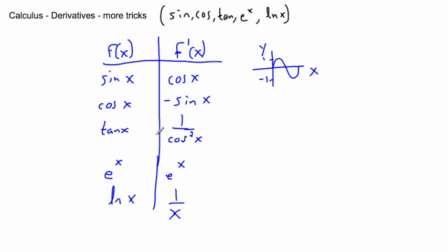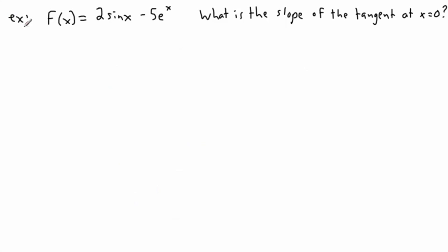So these are the main tricks we need to use with these five different tricks here. Knowing about the function, the original function here, and this is its derivative. Keep in mind, derivative is the slope of the tangent at any point. Well we can take a look here at an example then. f of x equals 2 sine x minus 5 e to the x, and we're looking for the slope of the tangent at x equals 0.